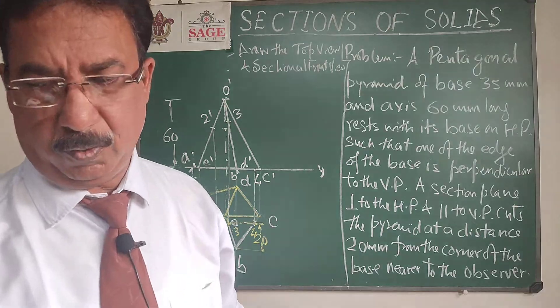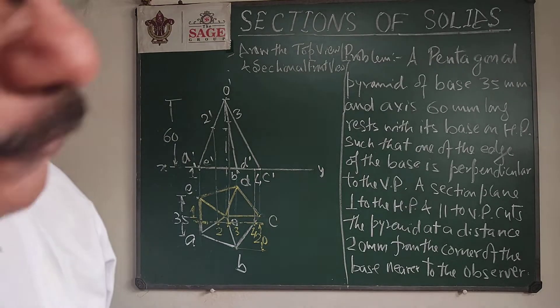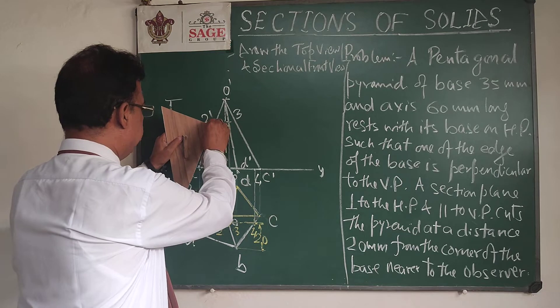So in this way I can get all the 4 points in the front view. Now join these points with the help of the straight lines.